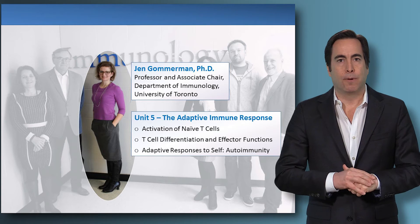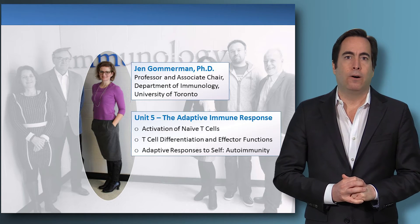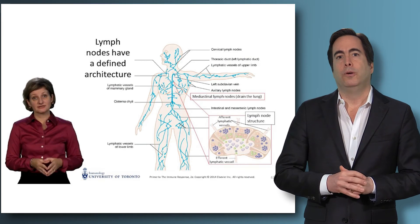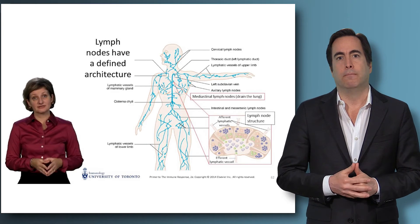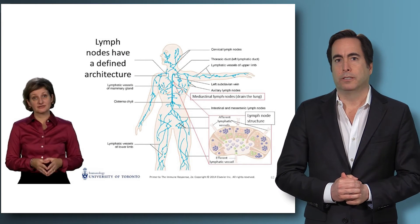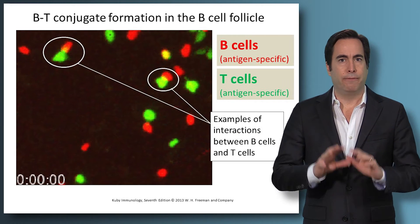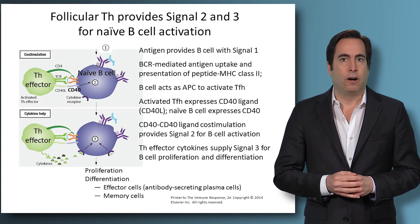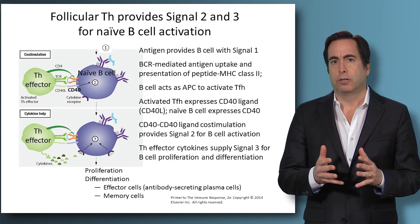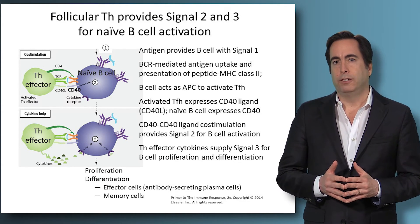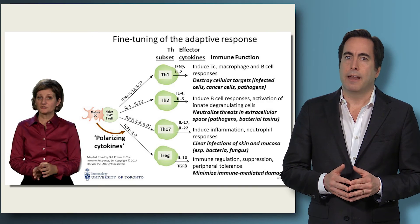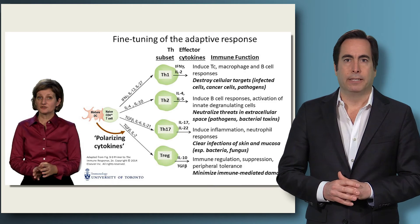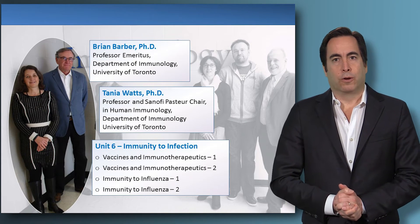In our fifth unit, Dr. Gummerman returns to describe how an adaptive immune response is generated in space and time. We will see how delivery of pathogen components to lymphoid tissues such as lymph nodes allows the colocalization of everything required to initiate the response. Dr. Gummerman also describes the complex molecular interactions required for activation of B and T lymphocytes and how an appropriate response is shaped from a wide range of possible defense functions.